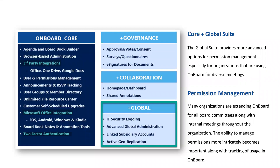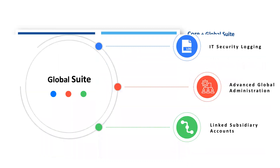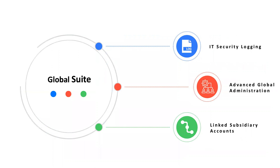The global suite adds some core functionality for older essentials and professional package customers, specifically around three major features: the ability to do enhanced security logging and reporting, the ability to create a global administrator with overall permission rights within your organization, and the ability to create unique instances — link subsidiary accounts for different groups, completely independent of each other outside the normal group management.